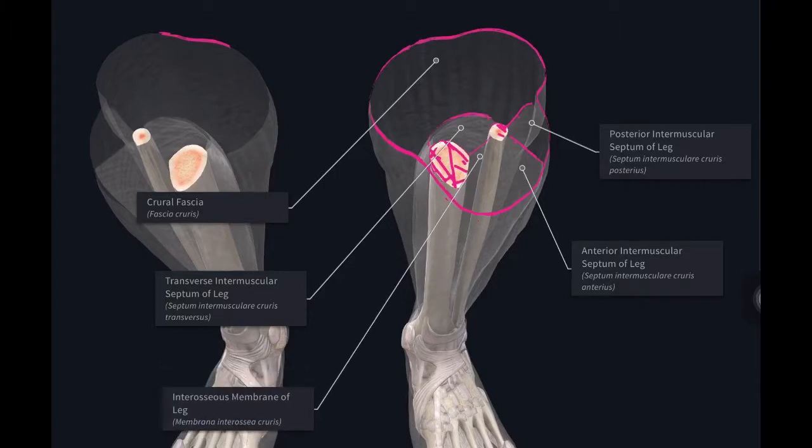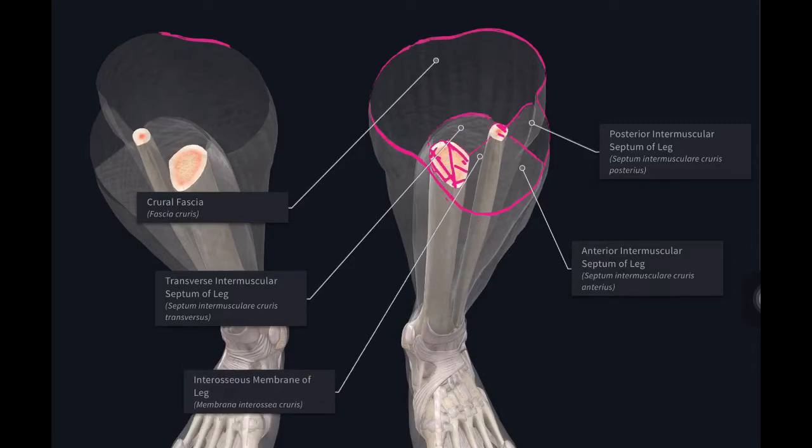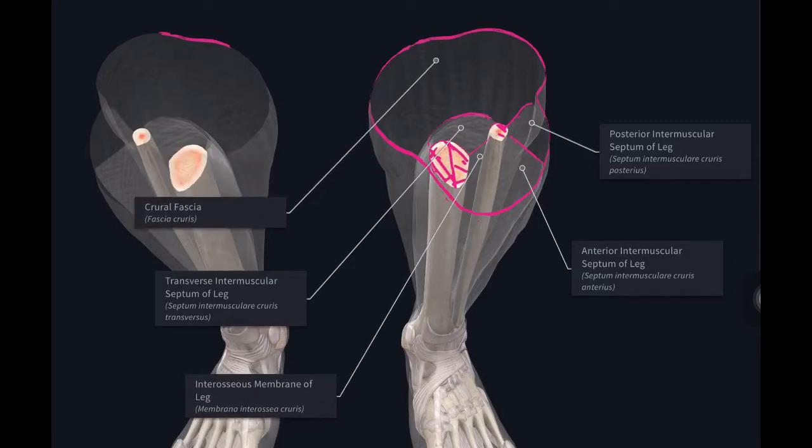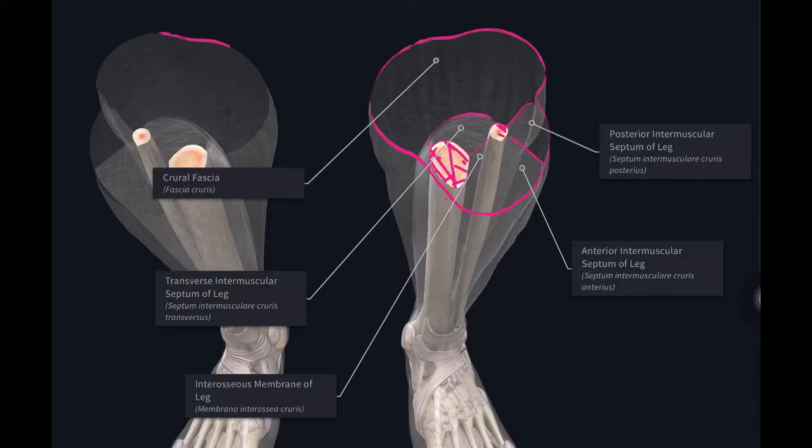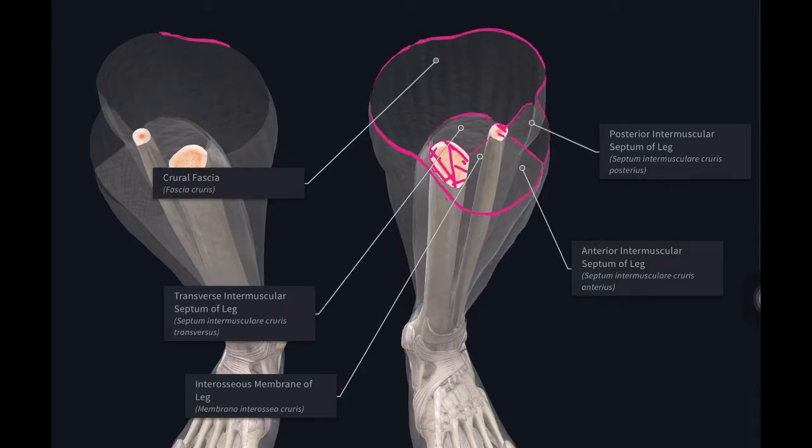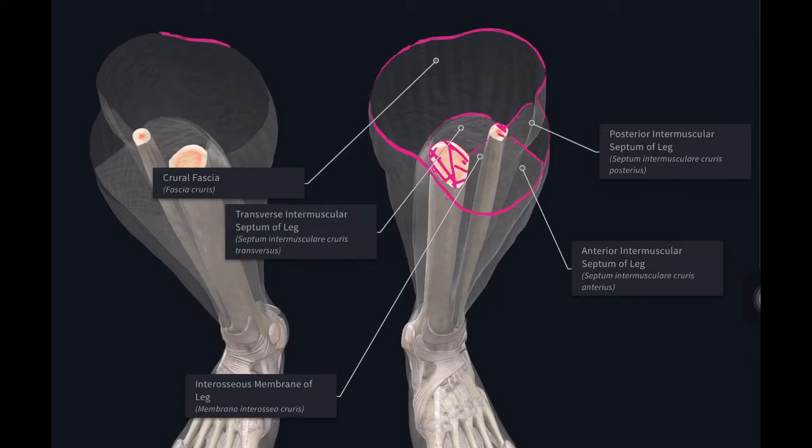The interosseous membrane and crural fascia together form the posterior compartment. The posterior compartment is divided into two parts, the deep and superficial part, by the transverse intermuscular septum of the leg. So this is how the compartments of the leg are divided.